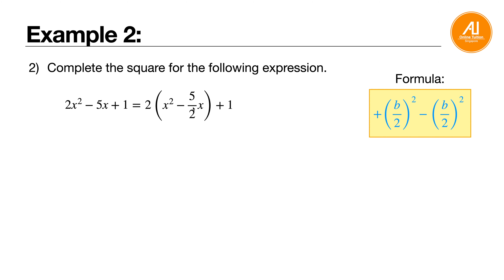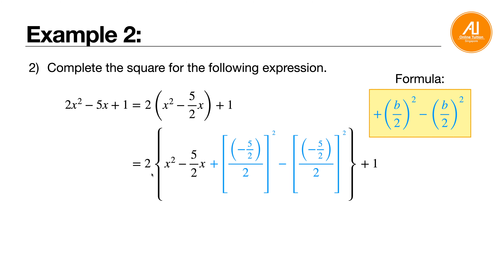Now what is my b? Looking at the bracketed expression, your b is negative 5 over 2, not minus 5. Your a is 1. The plus 1 stays outside. So you write: 2 times square bracket, x squared minus 5 over 2 x, now insert the formula: plus negative 5 over 2 over 2, bracket squared, minus negative 5 over 2 over 2, bracket squared, then close the curly bracket, plus 1. Make sure you have a big curly bracket so you don't get confused because there's a common factor of 2 outside.